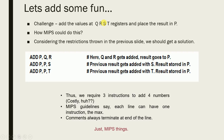These registers are to be added and the result placed into P. In MIPS: first, 'add P, Q, R' — I add Q and R and put the result in P. The hash symbol starts a comment, which must stay on the same line. Next, 'add P, P, S' — P and S are added, result goes to P. Then 'add P, P, T' — the result is now stored in P. We require three instructions to add four registers.